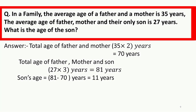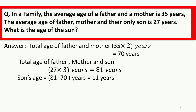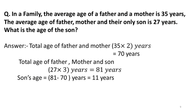Another question: In a family the average age of father and mother is 35 years. The average age of father, mother, and their only son is 27 years. What is the age of the son? Total age of father and mother = 35 × 2 = 70 years. Total age of father, mother, and son = 27 × 3 = 81 years. Age of son = 81 − 70 = 11 years.